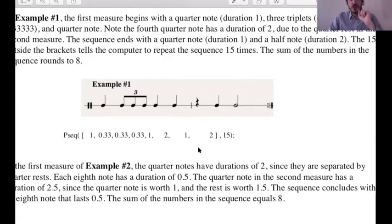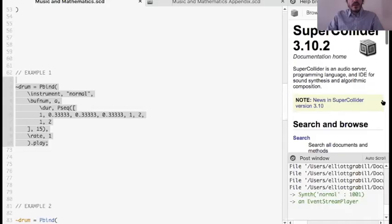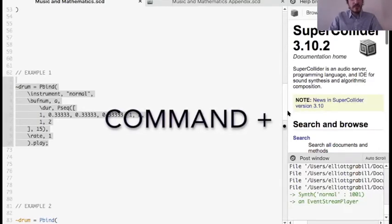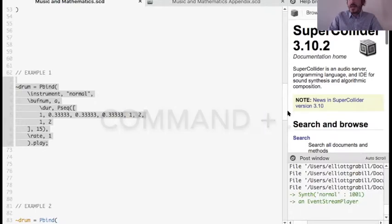And you can see how I've translated the durations here. So this quarter note corresponds to one. Each of these three triplet eighth notes correspond to one of these 0.333 numbers. You can see how these quarter notes have a duration of one, but this quarter note has a duration of two because it's got the rest following it. Now whenever we want to stop listening to this, we press command, period, and that stops it.